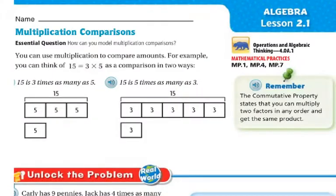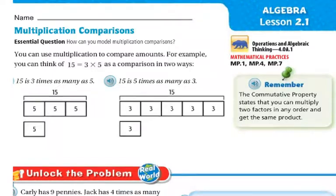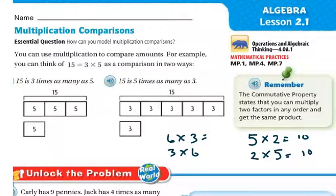So remember that the commutative property states that you can multiply two factors in any order and still get the same product. So what that means is 5 times 2 is the same thing as 2 times 5. They're both going to give you 10. And 6 times 3 is the same thing as 3 times 6. You're still going to get 18 as your answer for both. So that's the commutative property.